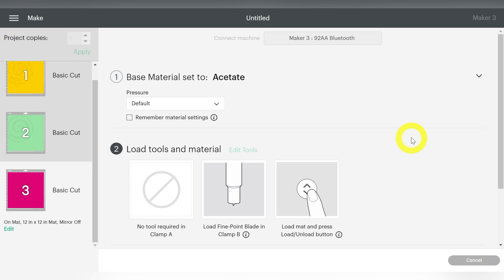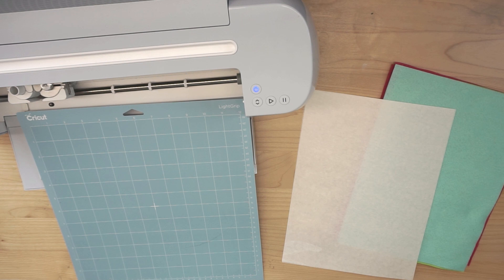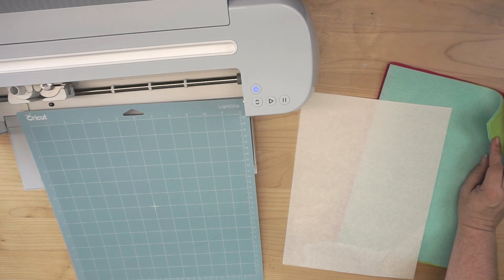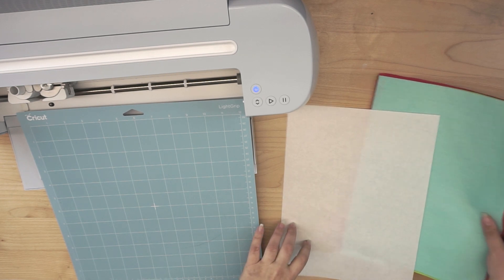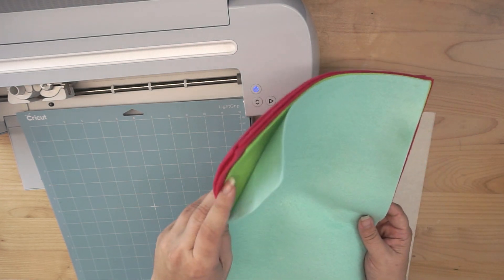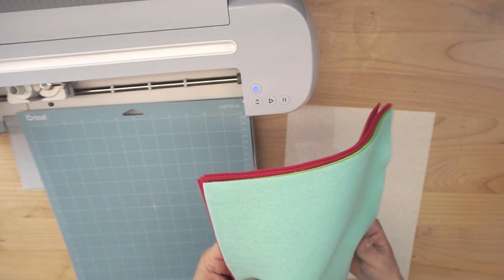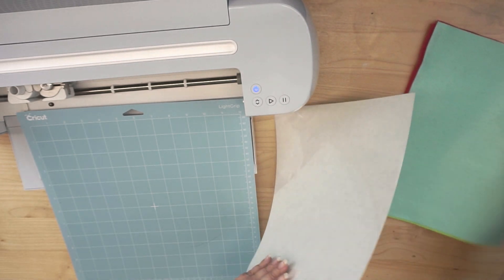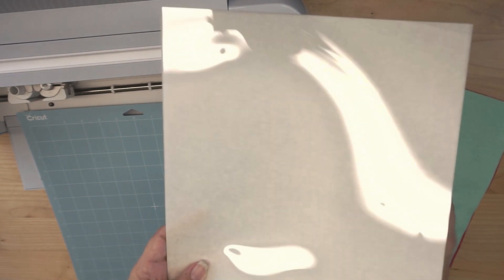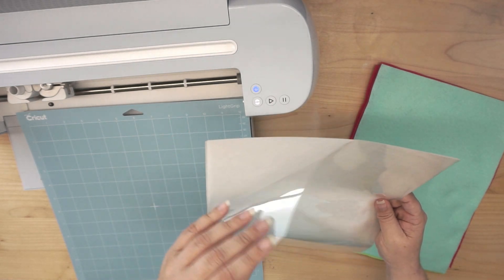So I'm going to go ahead and go over to the machine, and show you about loading on the Acetate sheets, and cutting them out to use with our project. Alright guys, so what we have here is some nice felt sheets. Nothing super special about them, just some nice fun spring slash summer colors. And then these are the star of the show today. These are Acetate sheets.